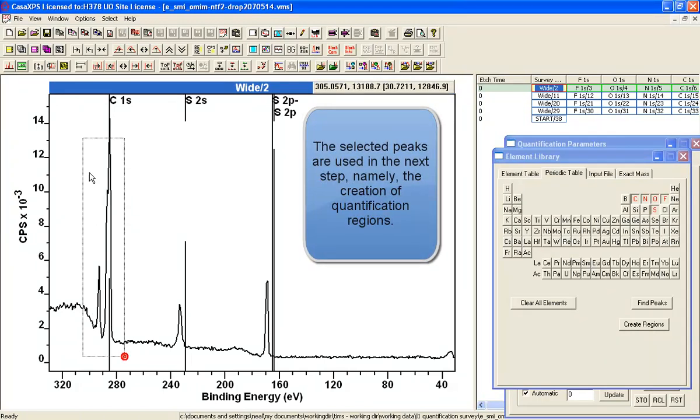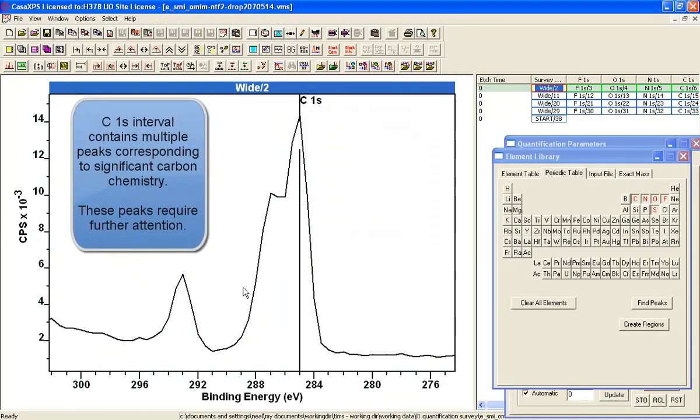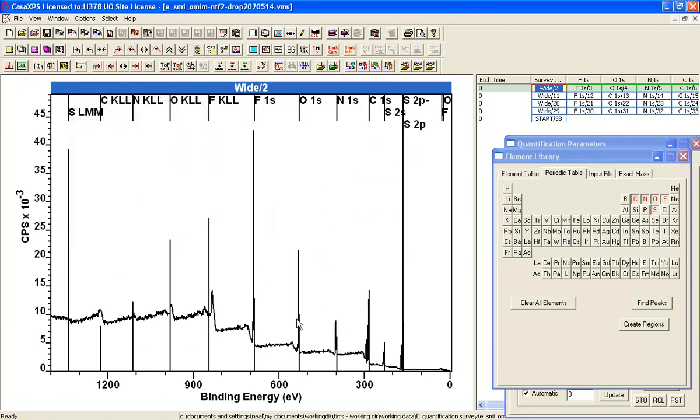There's a Carbon 1S, and the Carbon 1S has some structure here, so we have to bear that in mind when we create a region. And let's see now, if we look through the set, you can see that the Sulphur has a corresponding Auger.